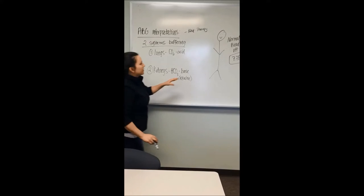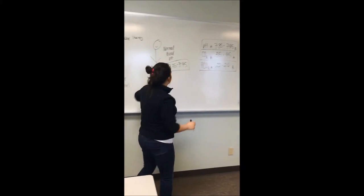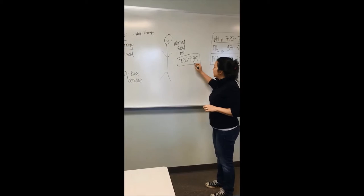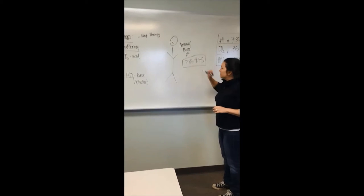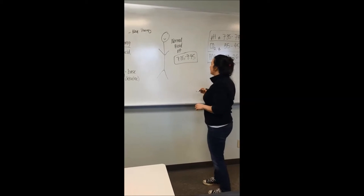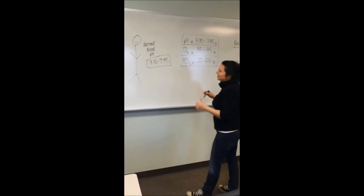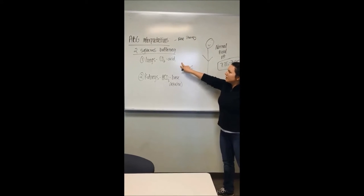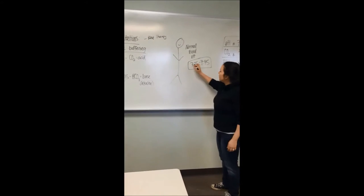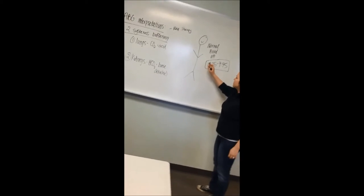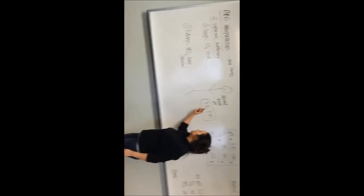When we're talking about the blood pH, normal that you remember from anatomy is 7.35 to 7.45. It's normal blood pH. If we deviate either way, we'll die. So our body has these two systems that buffer, meaning they try to take action to bring us back within this range.